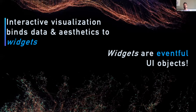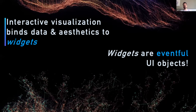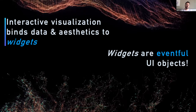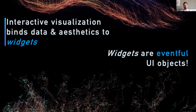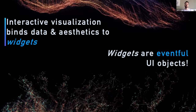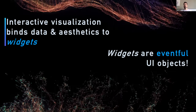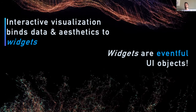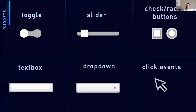To step up our game, we can bring interactivity to the equation of data visualization. We bind data and aesthetics with widgets, which are just eventful user interface objects we're already familiar with from the web or our applications. These are usually toggles, sliders, radio buttons, text boxes, dropdowns, click events, or even scrolling events.